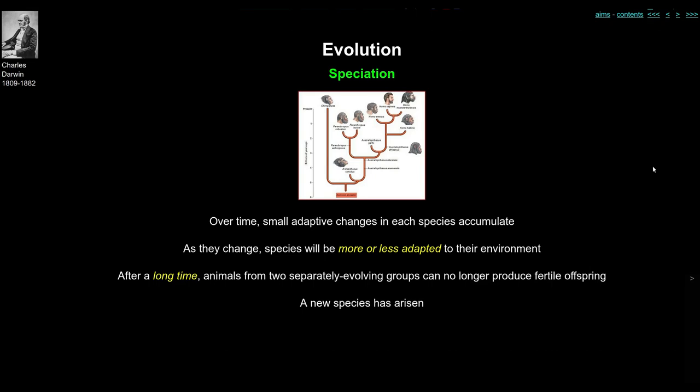At some point, those two groups are no longer able to interbreed to produce a fertile offspring — and that's when a new species has arisen. Think of horses and donkeys: they can breed and have mules, but those offspring are not fertile. So at some point along this line of changes, the two different sets of animals can no longer breed together, and that is the origin of species.